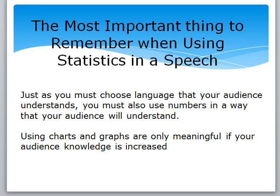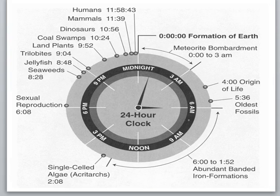I'll leave you with this example: I had a student doing an informative speech about geological time periods. When we think about the age of the earth, numbers in the billions are difficult to conceptualize. There are sources available online, and this particular graph shows the development of the earth using a 24-hour clock. This gives you an idea of how you can take very large, hard-to-grasp numbers and statistics and use them in a way the audience can understand. So the point of any visual aid is to increase your audience's understanding and to support your verbal message.